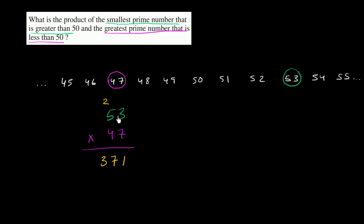And now we can do 4 times, I'll ignore this now, 4 times, put a 0 here because we're really multiplying with a 40. 4 times 3 is 12, 4 times 5 is 20 plus 1 is 21.